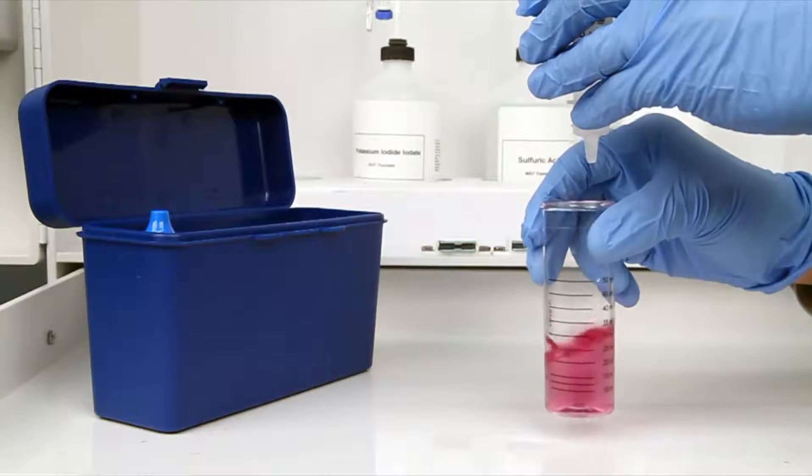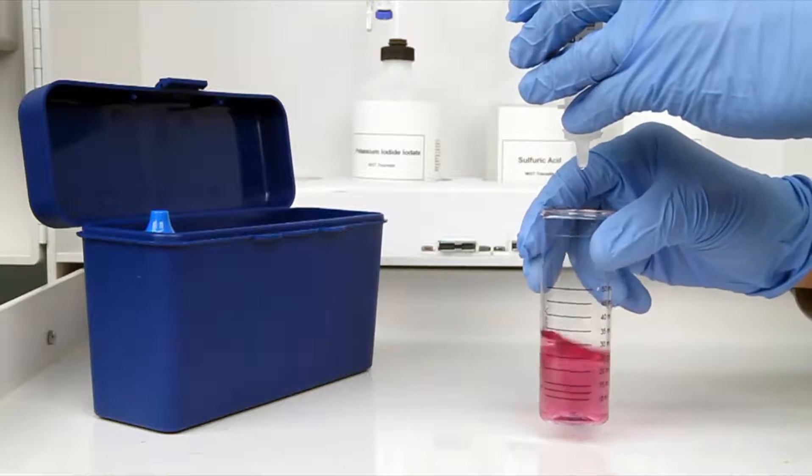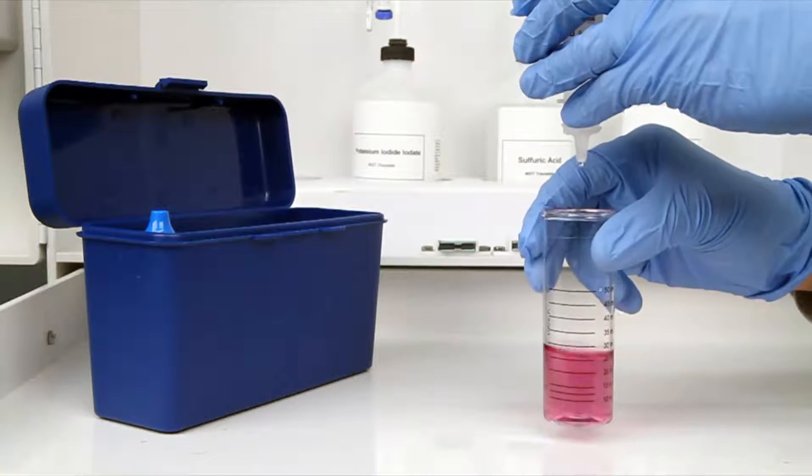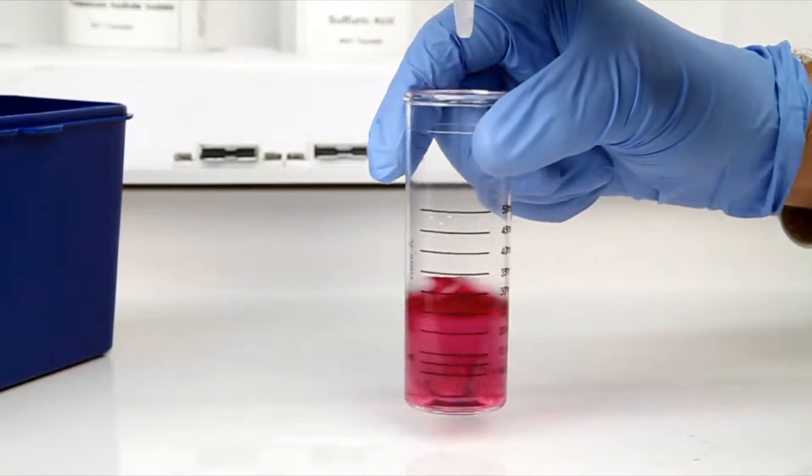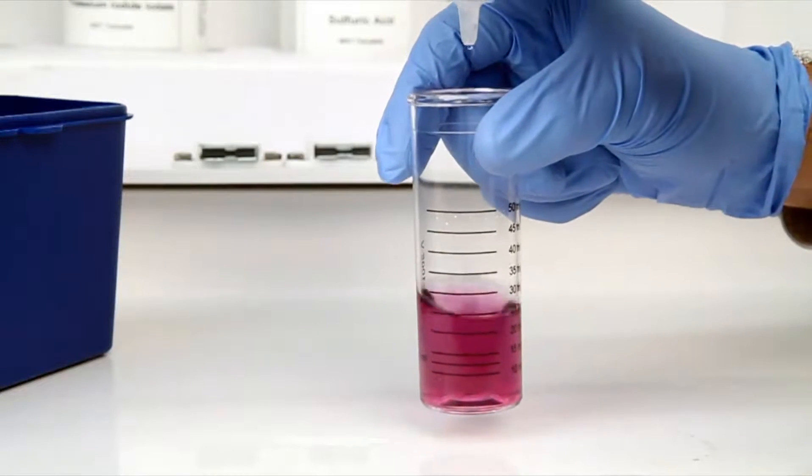The bottle of titrant contains a dropper tip, therefore it's important to hold the bottle vertically to make sure you get a consistent drop size. After the addition of each drop of titrant, you want to swirl the vial to make sure the sample is properly mixed.